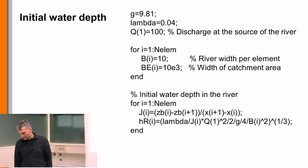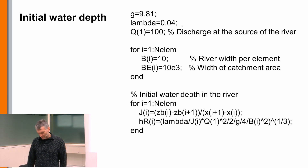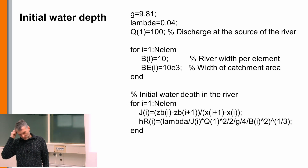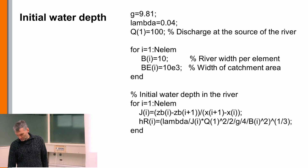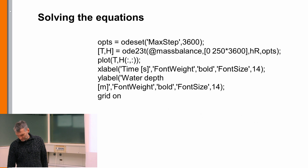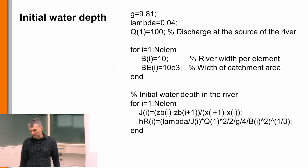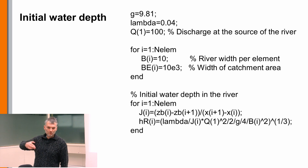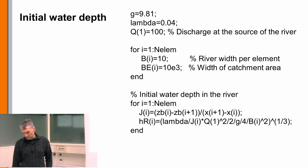Then we define some constants: gravitational acceleration and lambda, the friction factor according to Darcy-Weisbach. We also define the inflow into the first compartment — what is coming from the source. In this case we want 100 cubic meters per second from the source. Of course water also comes from the soil around the river, but for now we only consider a source at the beginning. Later we will also introduce groundwater elements.